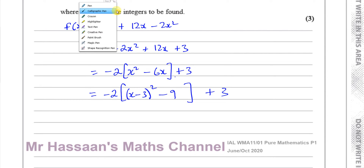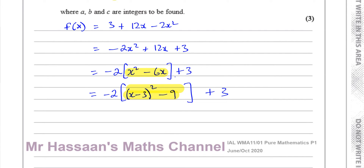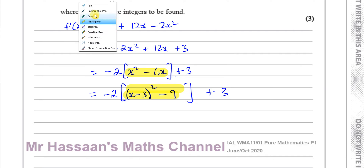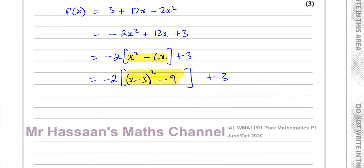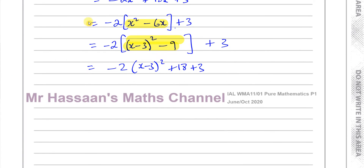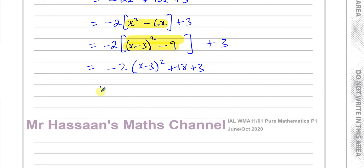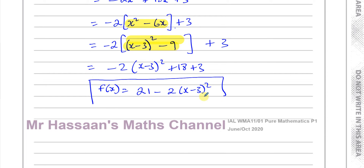These two expressions are exactly the same. Now I've got it in the form I want, with a squared bracket as required. I can tidy it up by multiplying -2 with the terms inside: -2 times (x - 3)², and -2 times -9 = +18. Plus the +3 at the end. So 18 + 3 = 21. I can now write this in the required form: f(x) = 21 - 2(x - 3)².